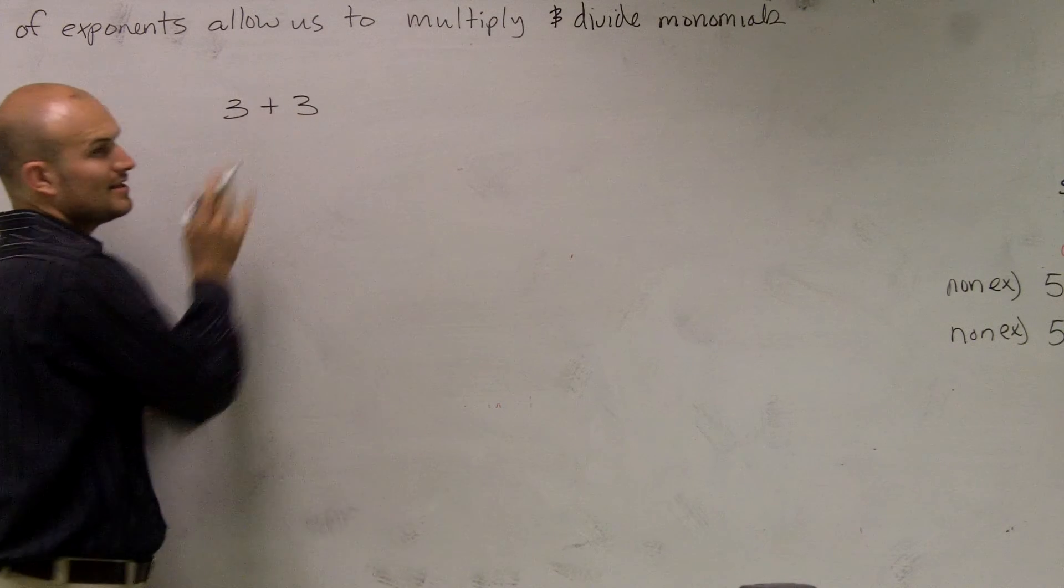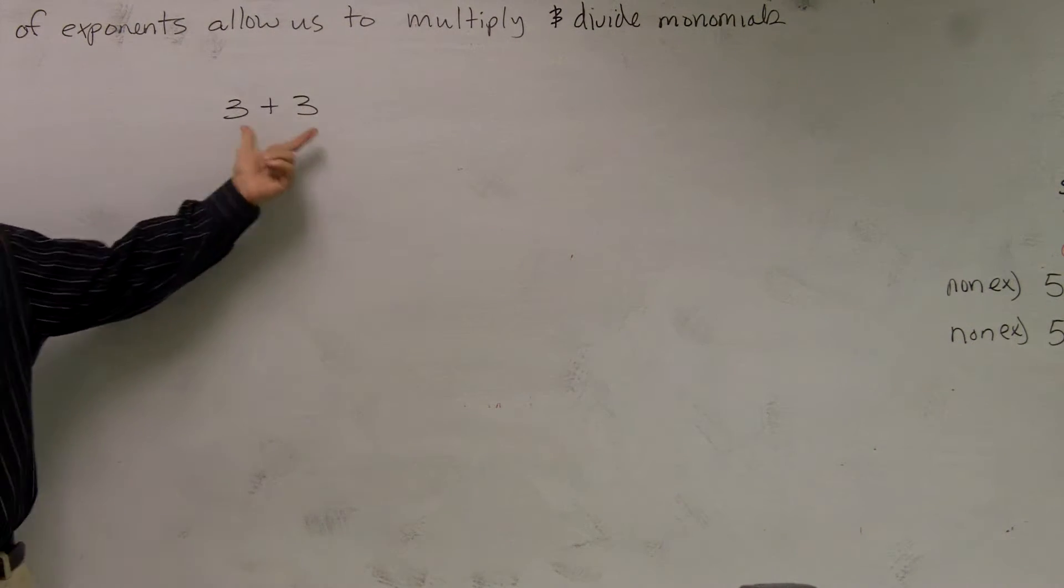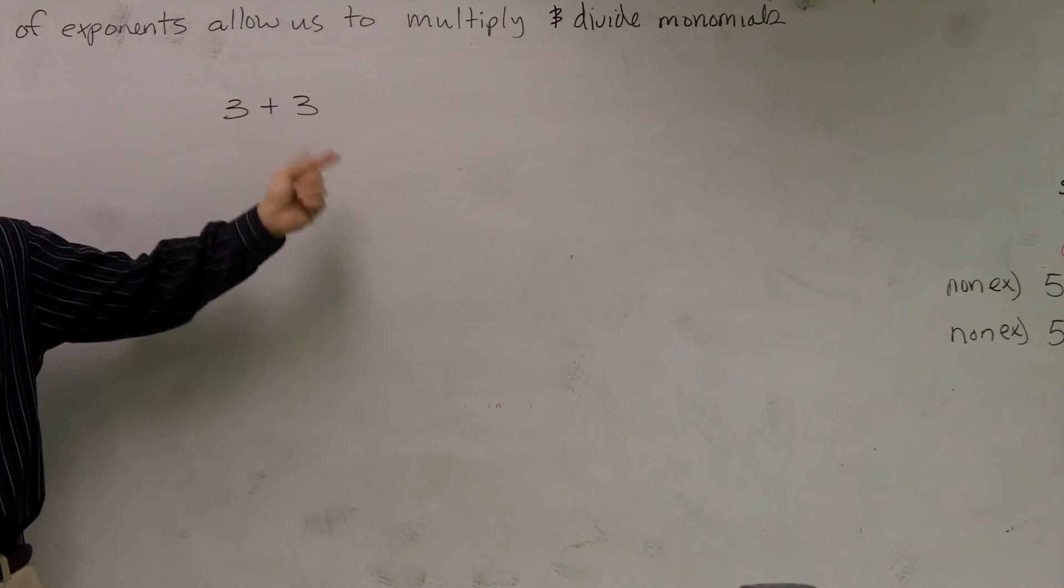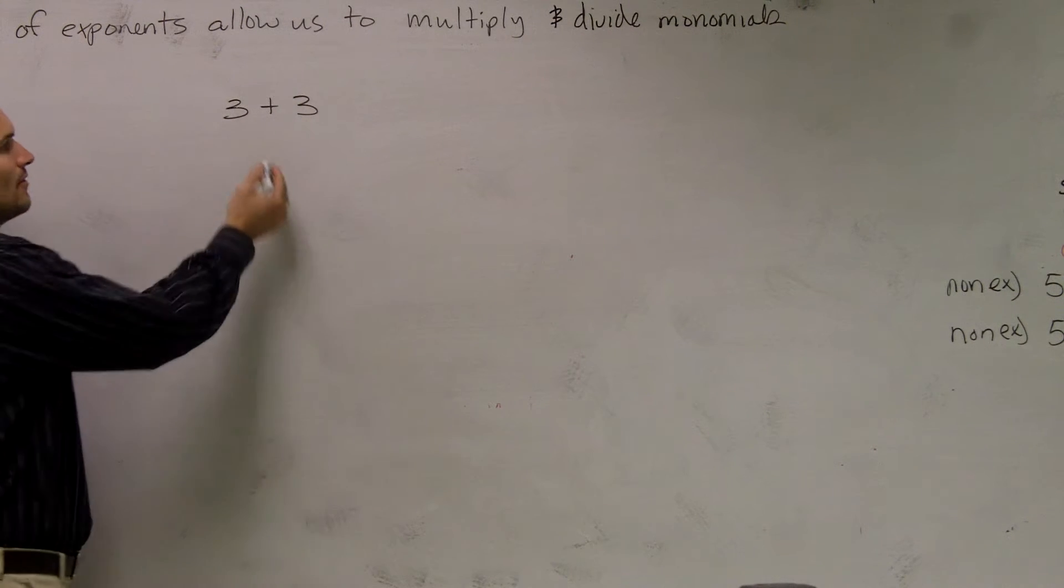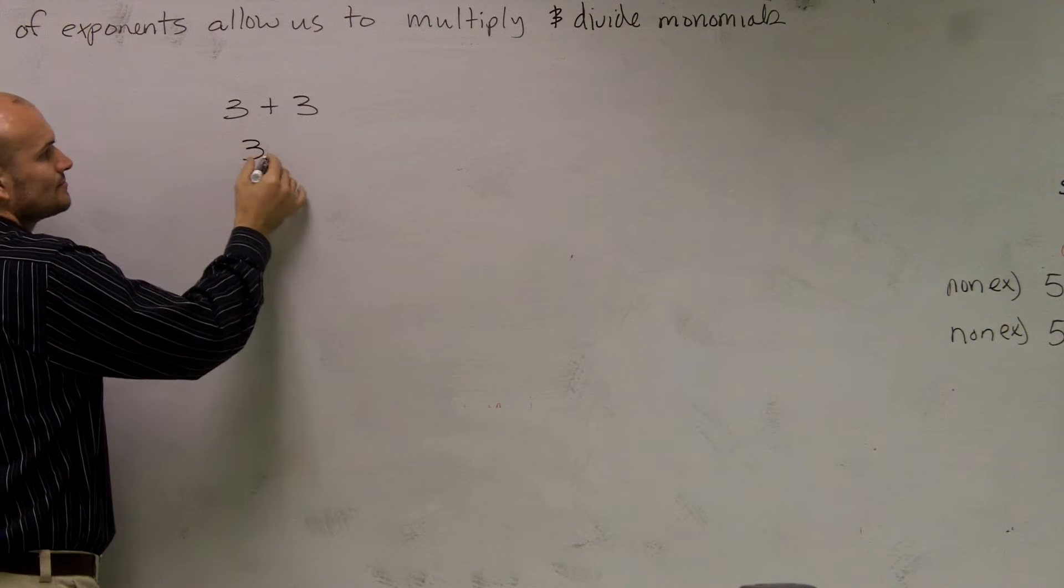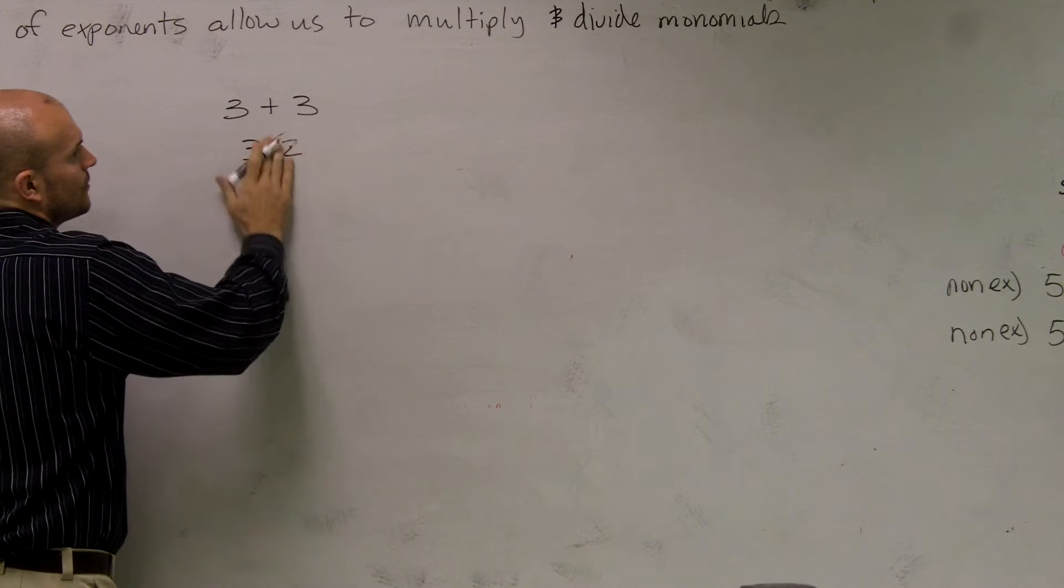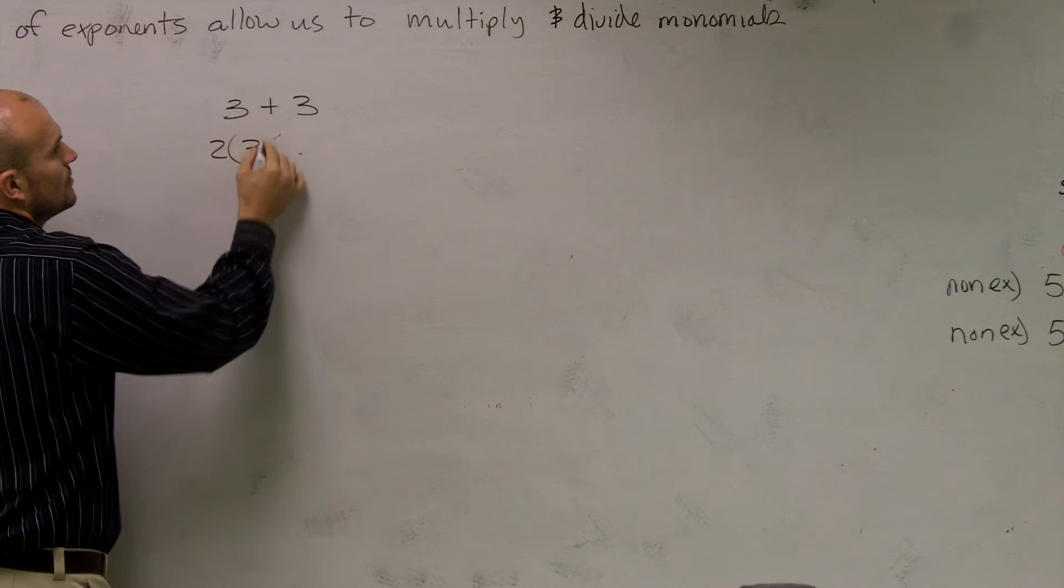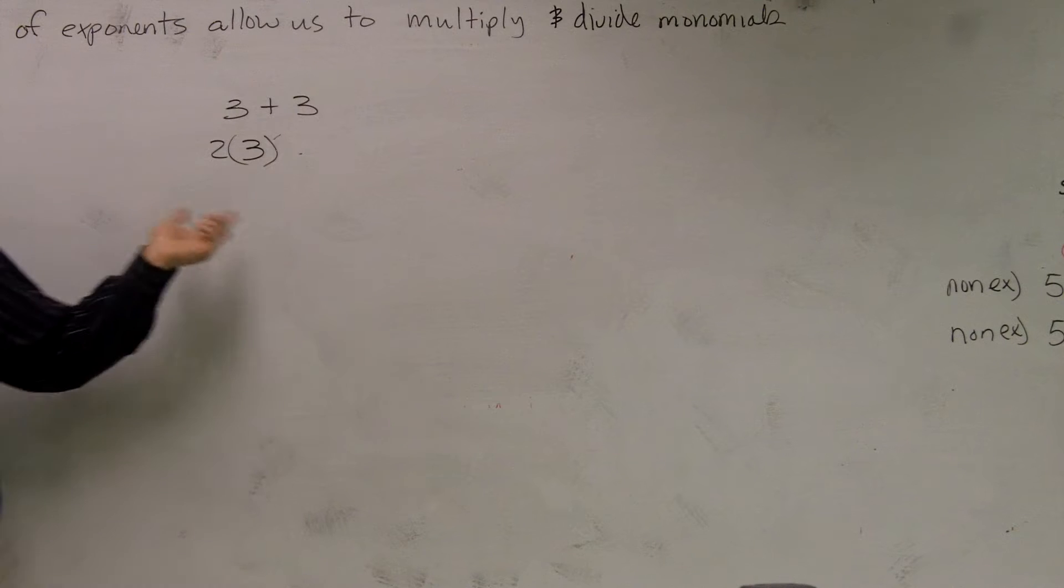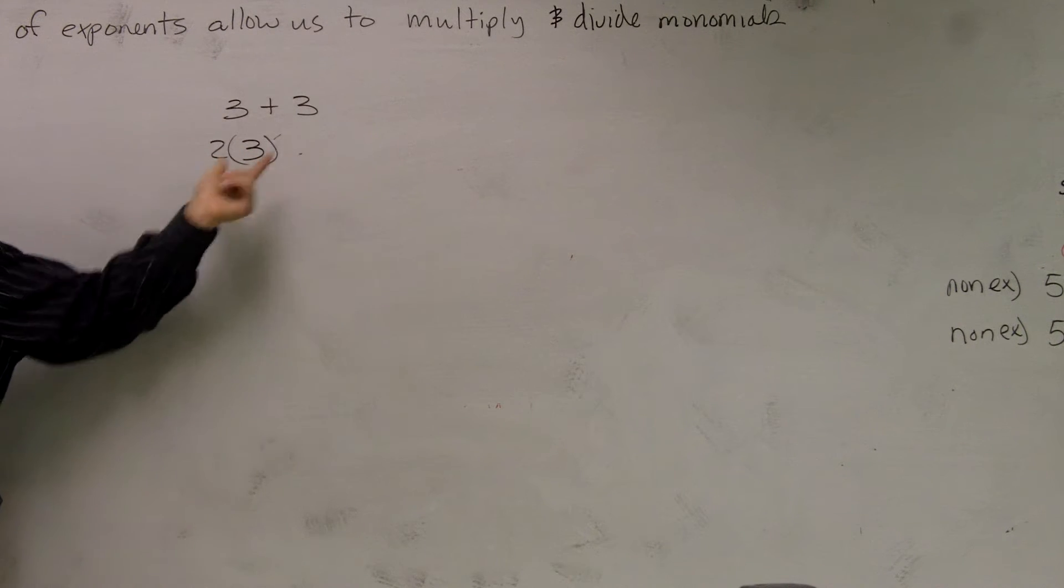we said, well, rather than just saying 3 plus 3 plus 3, what we could do is say, how many times am I adding 3 up, and I can just multiply by that number. So therefore, I can rewrite this as 2 times 3. And what 2 times 3 means is I'm just going to add 3 up 2 times, right?